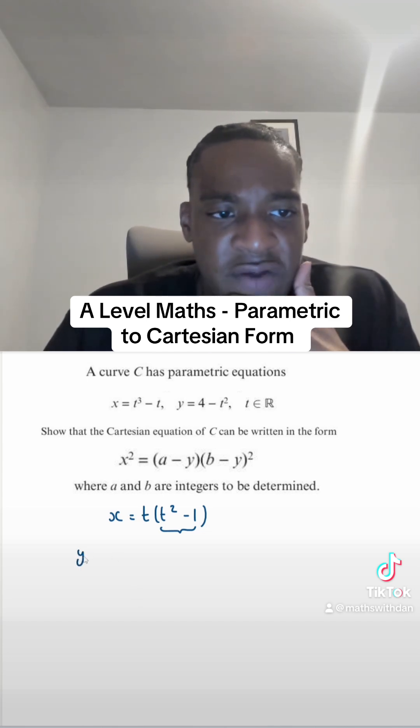Let's start with y. I've got y equals 4 minus t squared. That would mean that t squared equals, if I move that to the left and the y to the right, 4 minus y.